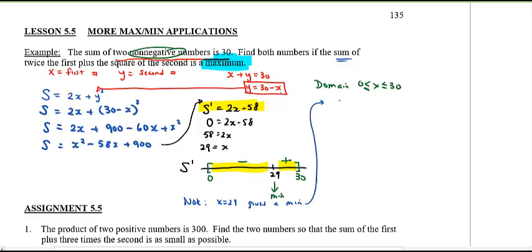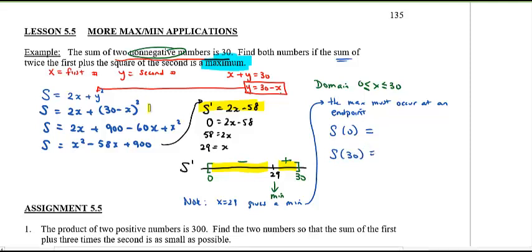The maximum must occur at an endpoint. We test both: plug in S(0) and S(30) using our equation S = 2x + (30 − x)². S(0) = 2(0) + (30 − 0)² = 900. S(30) = 2(30) + (30 − 30)² = 60. So 900 is the larger value.